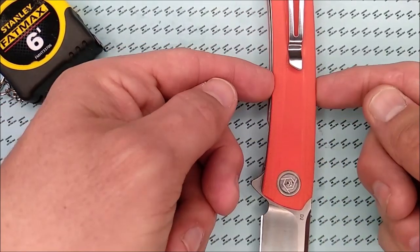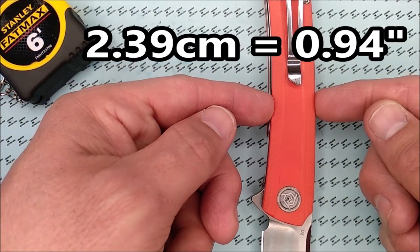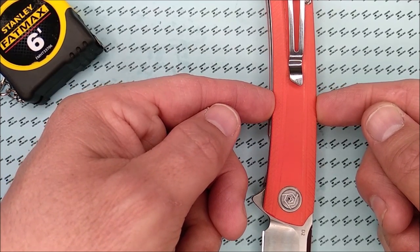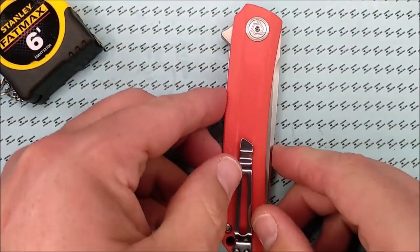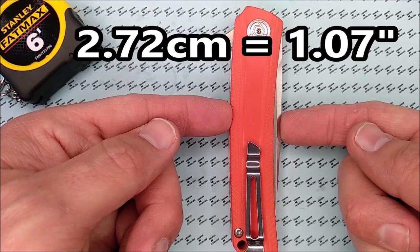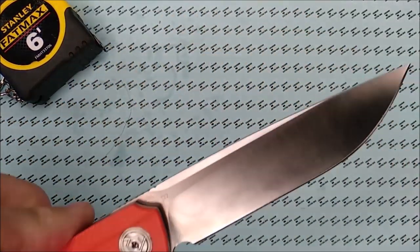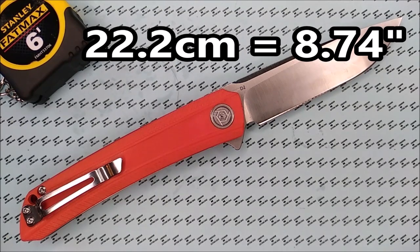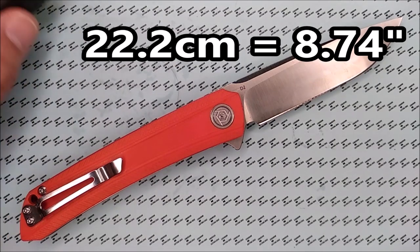The handle depth, this way, 2.39 centimeters, .94 of an inch. And the handle depth, when the knife is closed, is 2.72 centimeters, 1.07 inches. And, like I was saying about the full length of this knife, it is 22.2 centimeters, 8.74 inches.